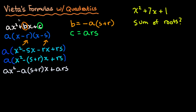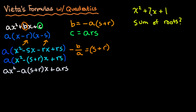We see that (r plus s) times negative a equals b. Dividing both sides by negative a — and we know a is not zero since we have a leading coefficient of one — we find that r plus s equals negative b over a. So the sum of the roots of any quadratic is negative b over a.